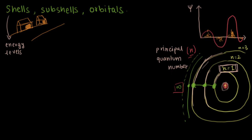In the previous video, we talked about shells, subshells and orbitals in brief, but we did talk a bit more about the shells. We learned that the farther the electron gets away from the nucleus, the more energetic it gets. In other words, the farther away, the shells have more and more energy. And we saw that we can represent the energy levels or the shells using the principal quantum number, like n equals 1, 2, and so on.